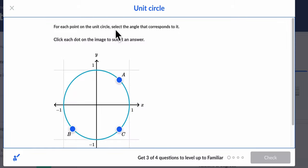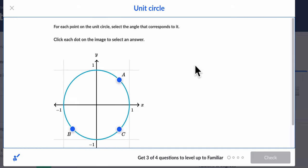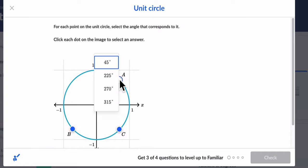For each point on the unit circle, select the angle that corresponds to it. Click each dot on the image to select an answer. Alright, so what angle is this?